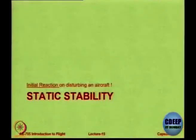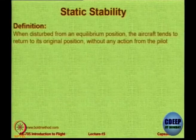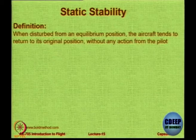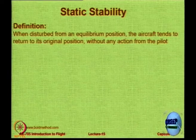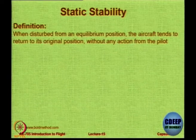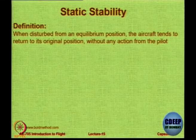Looking at static stability: it is only a function of the initial reaction — the tendency, not the final outcome. As you disturb an aircraft, its initial reaction on its own determines static stability. The definition is: when you disturb an aircraft from a trimmed or equilibrium position, if the aircraft tends to return — it need not return finally, but at least the tendency is to return — then we call it a statically stable aircraft.